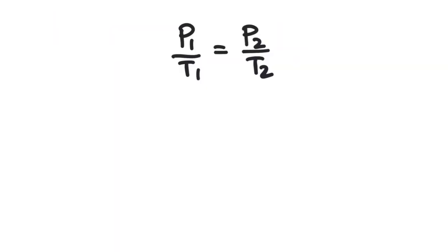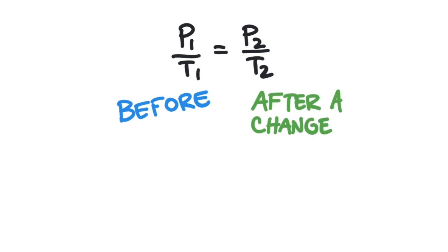Using an equation, Gay-Lussac's Law can be described like this. P1 over T1 equals P2 over T2. Basically, this is showing the relationship between two sets of conditions. The before conditions are represented by the ones and then after some change occurs, the conditions are represented by the twos.